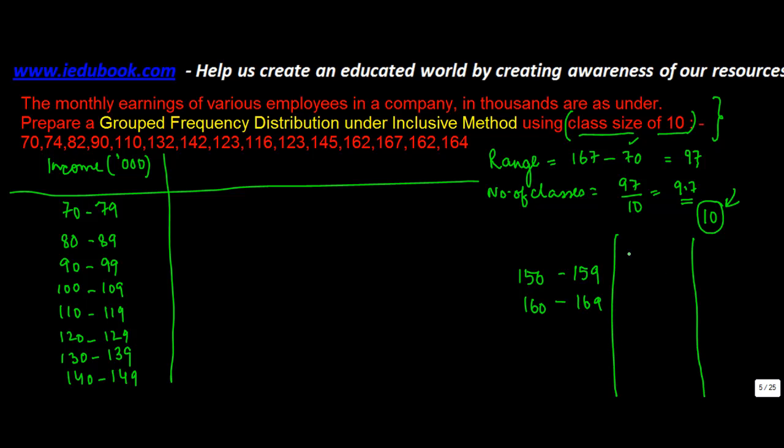And then the frequency. Now since these are inclusive method, the last number if it comes has to come in this particular case. So 70, right? 74, 82 will fall in this bracket. 90 goes to the next one. 110, well there is no confusion out here. 132.